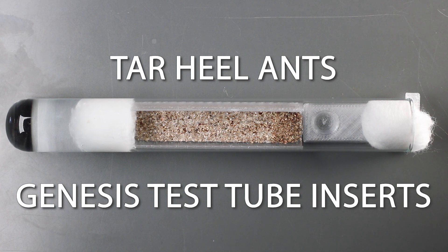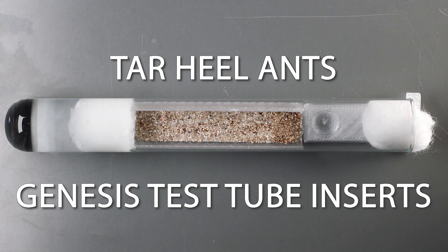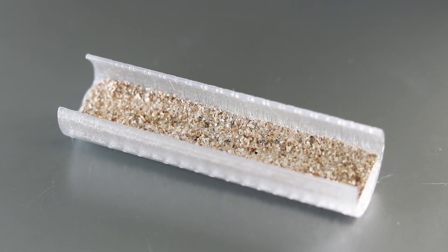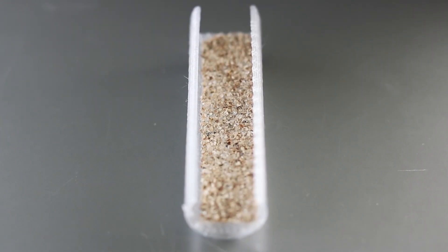The Genesis inserts provide an enhanced living environment for ants in test tube setups. The inserts are made of a custom fitted plastic tray, an absorbent stone material, and a light coating of substrate.